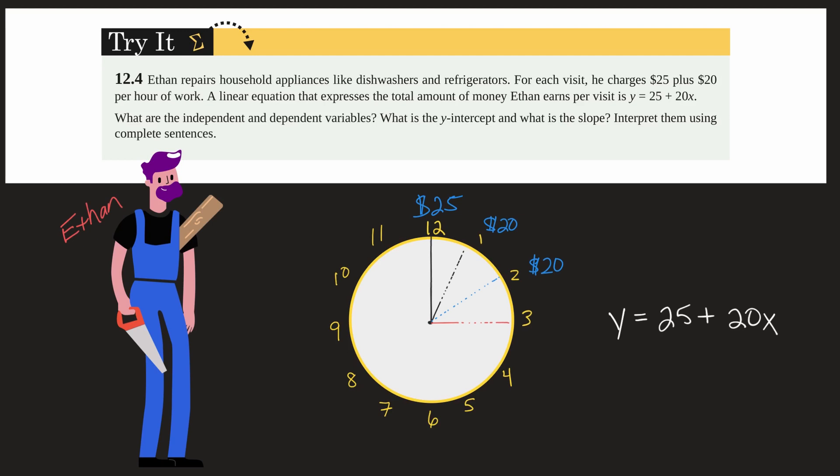And the amount of money he earns is dependent on the fee he charges and then the number of hours he works. So y here is our dependent variable. And that is the money he makes. And then x is the independent variable that are the number of hours or time he works.